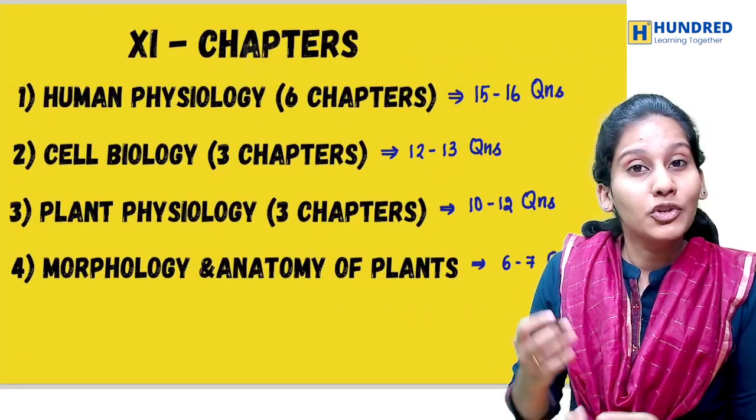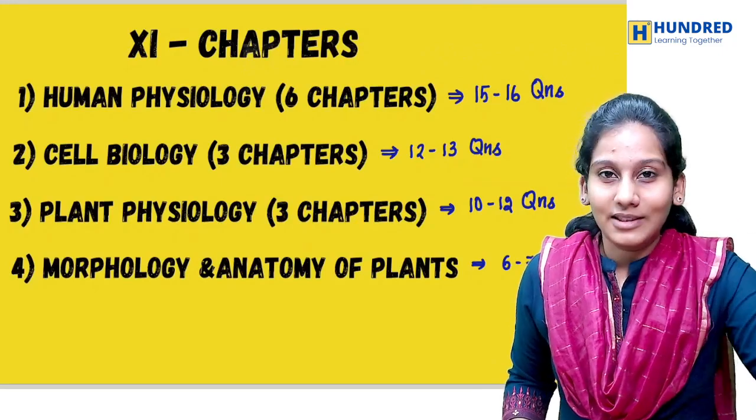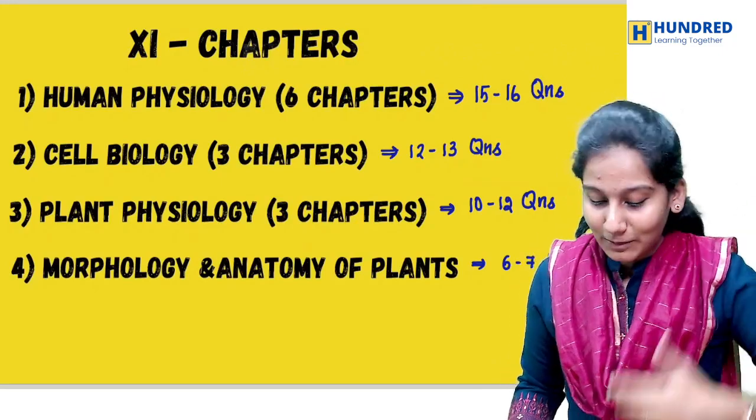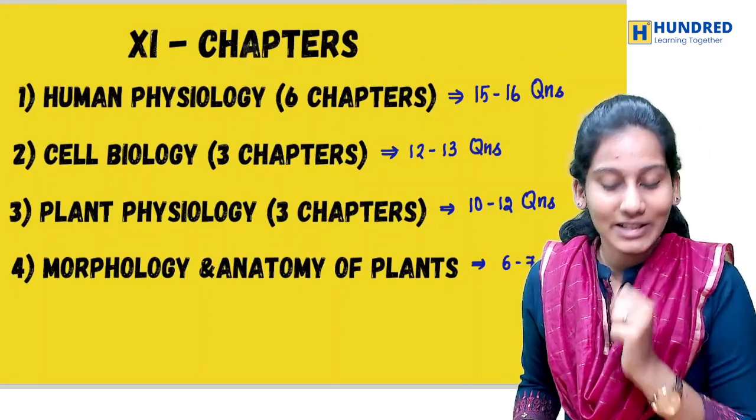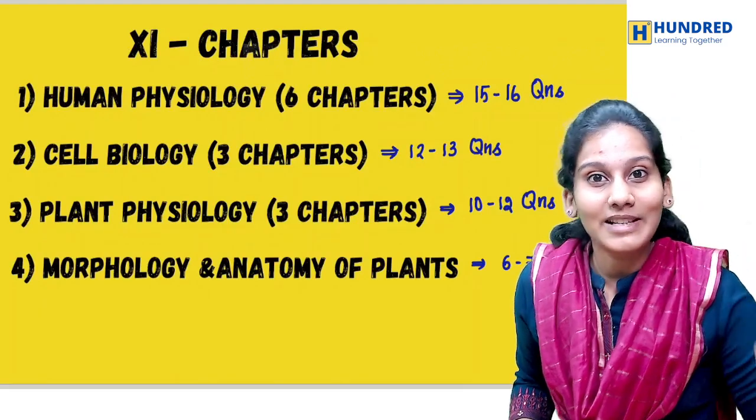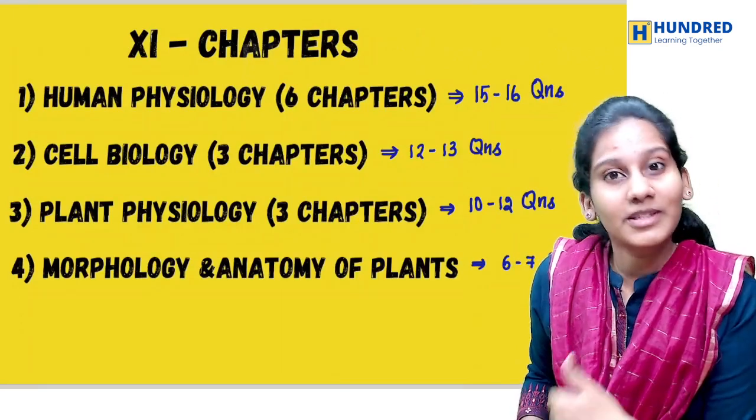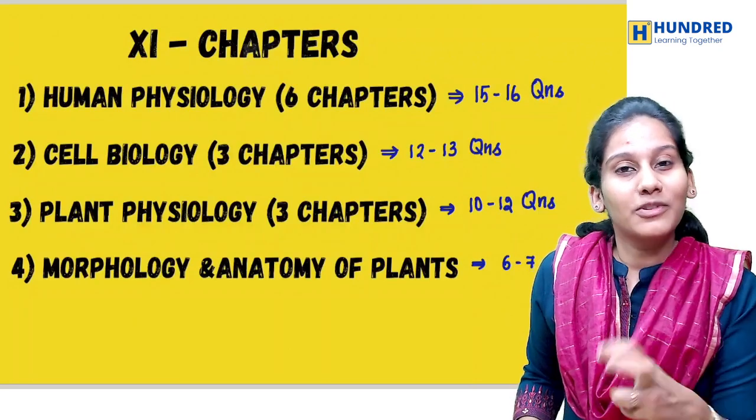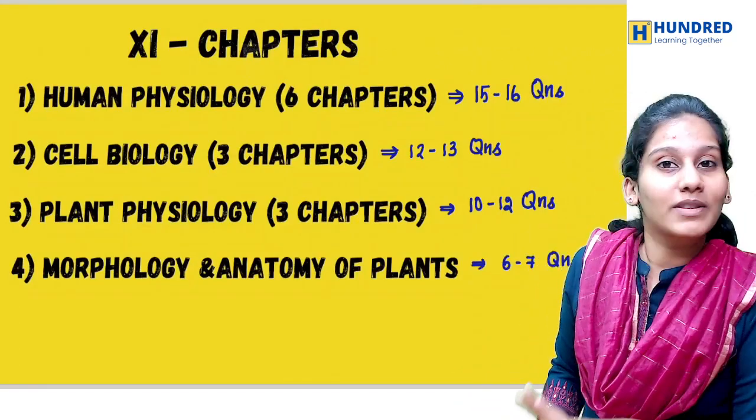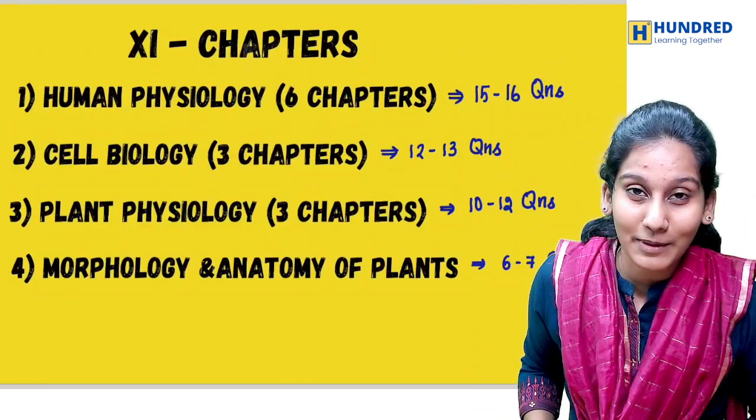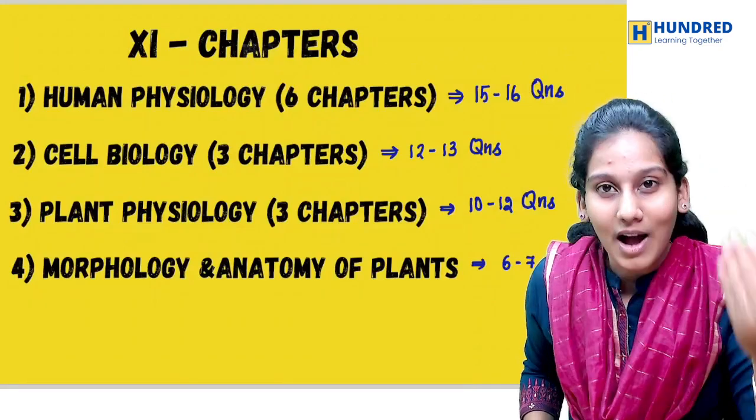The next chapter is Human Physiology. From the Digestion chapter, we have higher weightage. You can split it with any other chapters. Cell Biology, especially Cell Cycle and Division, and even in Biomolecules. In Plant Physiology, two chapters are removed, so equally in the last two years we can distribute the questions. We expect 6-7 questions.